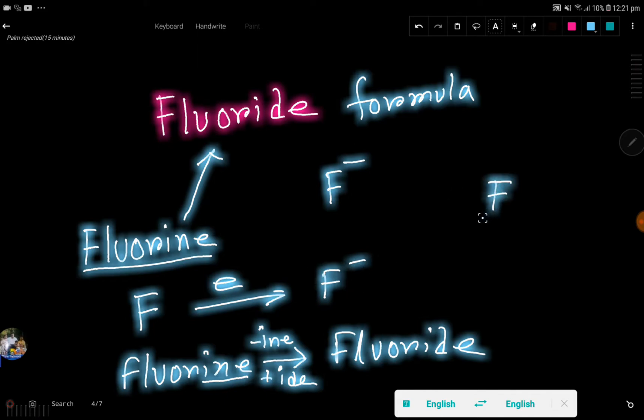This is fluorine and its atomic number is nine. Atomic number nine means it has nine protons and nine electrons. This is neutral, but when fluorine takes one more electron, you add one electron here. In fluoride, you are getting 10 electrons.